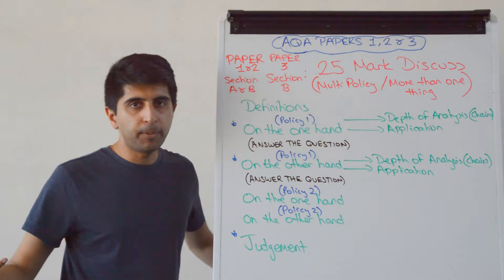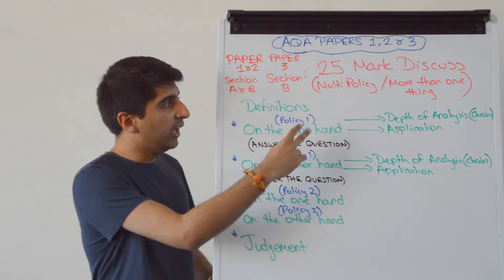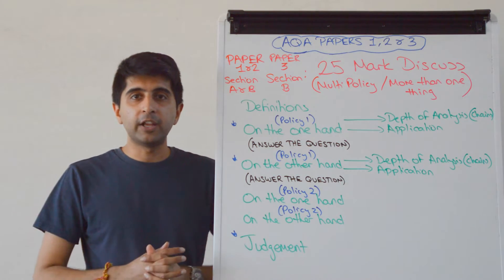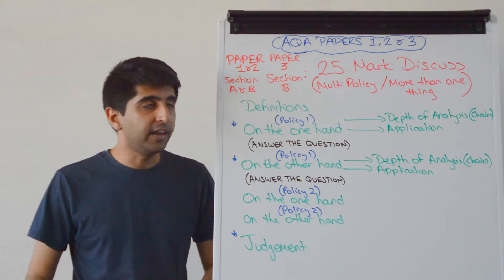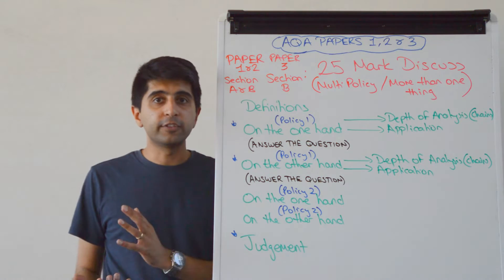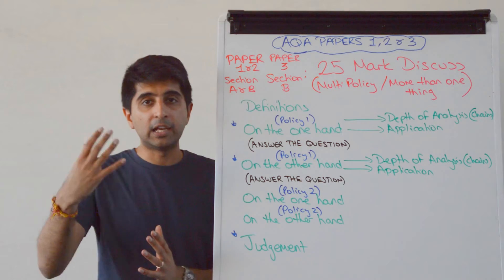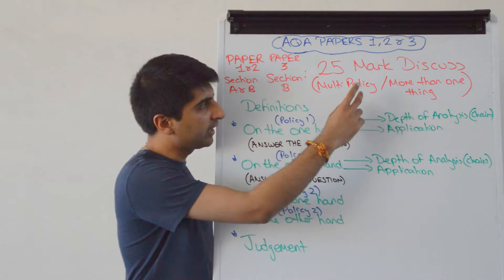Or you've got to discuss more than one thing. For example, multi-policy could be discuss all the policies available to the government to increase economic growth, or discuss the range of policies available to reduce a given market failure. Discussing more than one thing could be having to discuss the consequences of inflation and deflation in one essay, and then your judgment is which one is worse, high inflation or deflation.